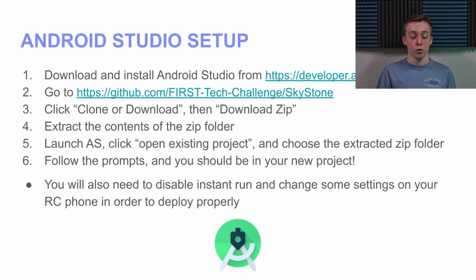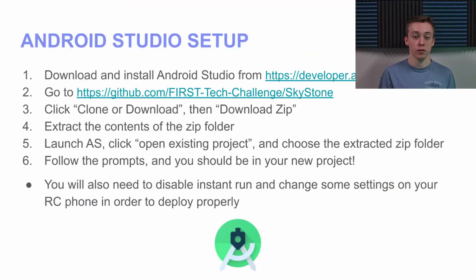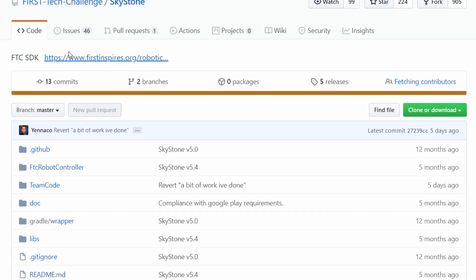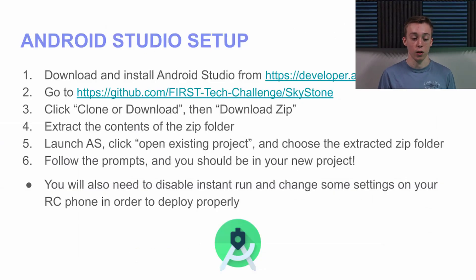For Android Studio setup: download and install Android Studio from the link — all links from this video will be in the description. Then go to the public code repository for the FTC SDK, download the zip file, extract it, and open the project in Android Studio. You'll need to disable Instant Run and change some settings in your robot controller phone to be able to deploy to it. There are a lot of great guides out there and I'll have links in the slideshow with more complete guides if you get stuck.